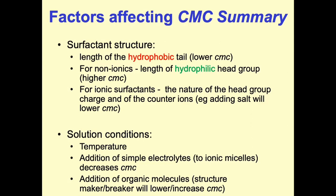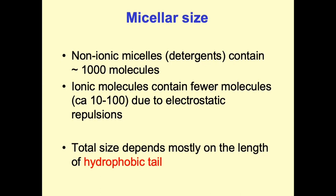So, what have we learned so far in lectures one and two? We've looked at the factors affecting the CMC, the surfactant structure itself, and how that impacts micelle formation. Regarding micellar size, non-ionic surfactant micelles tend to be larger, with around 1000 molecules in a micelle, because there is no repulsion from charges in the head group as there is for an ionic surfactant.